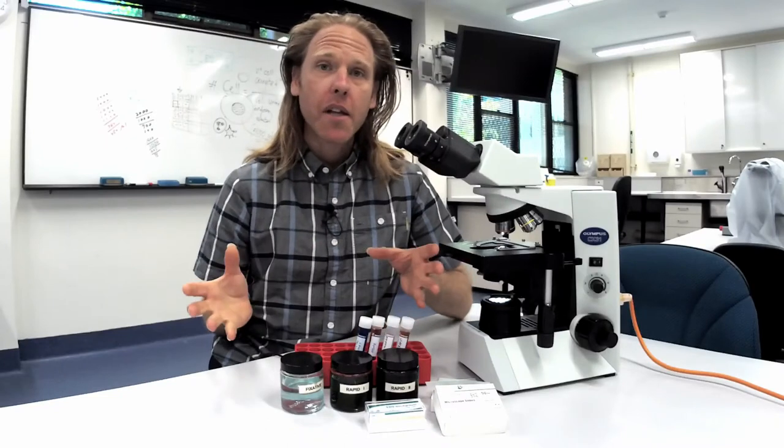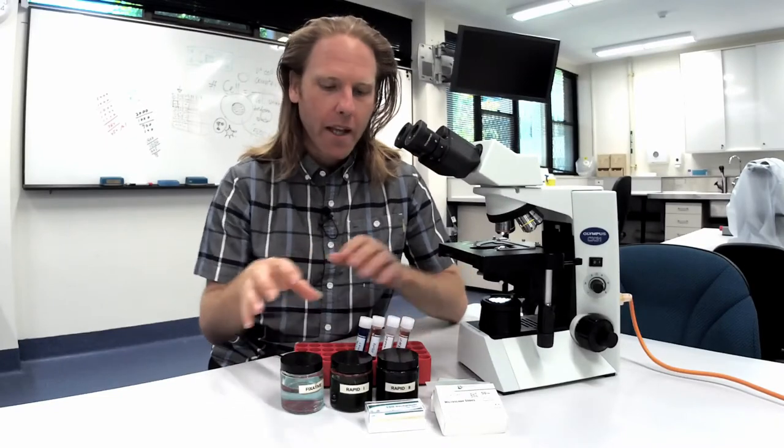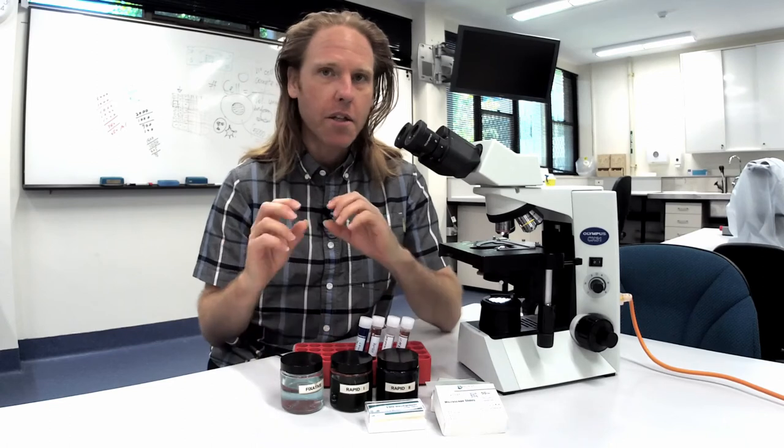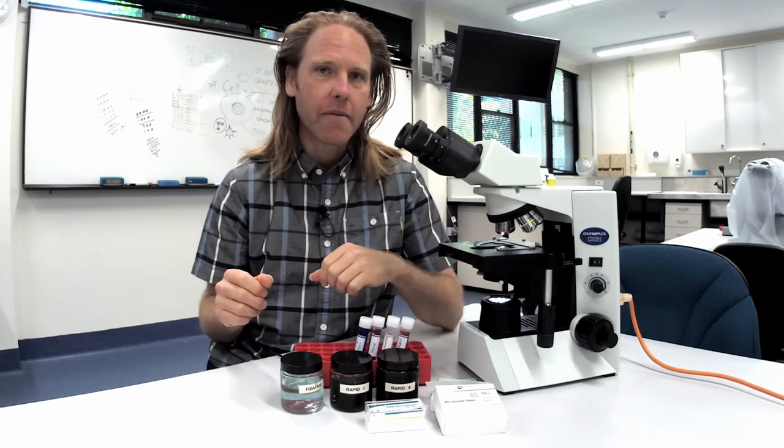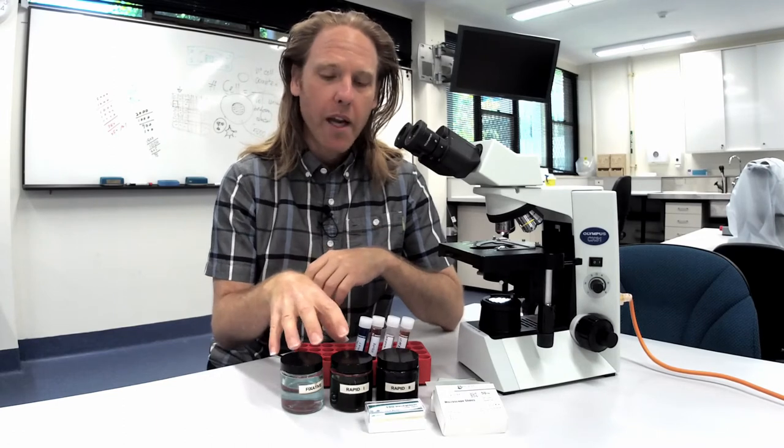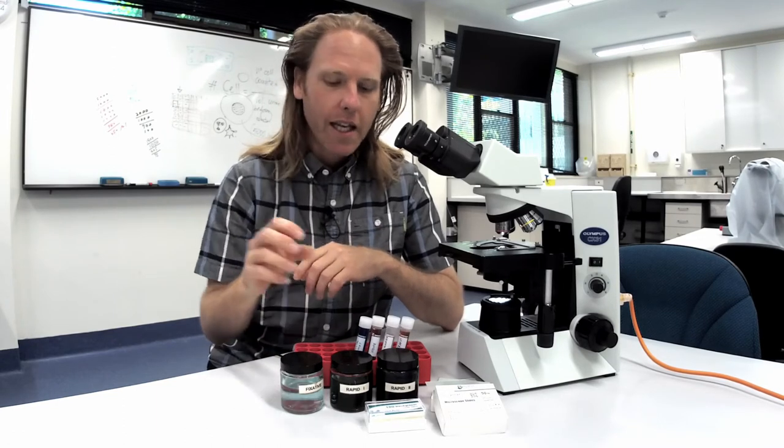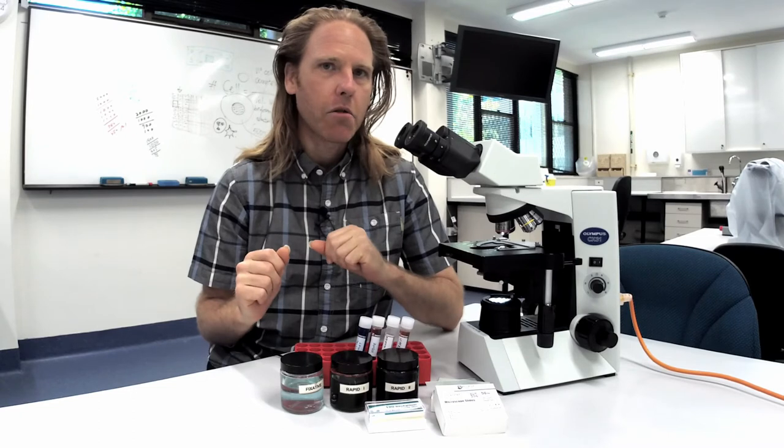The two main stains we use in the hospital are Difquik and Gram. Difquik is excellent because it shows cell morphology really well. It's quick and easy and it's cost effective. Now you need to be aware that with Difquik the stains need to be changed regularly and it may not show up mast cell granules all that well.